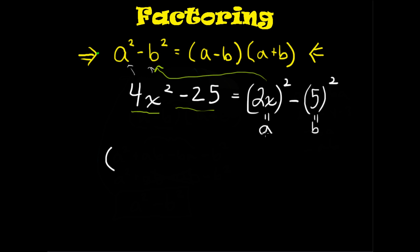So instead of a we can write 2x, and instead of b we can write 5, and instead of a we can write 2x, and instead of b we can write 5. So this is the factored form of our original 4x squared minus 25.